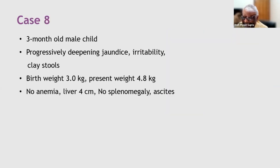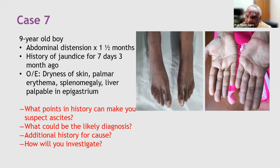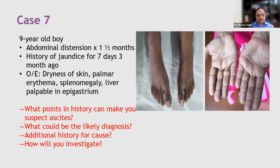Liver biopsy for autoimmune hepatitis and metabolic profile are also important investigations. To summarize: for liver dysfunction — liver function tests, serum protein, and prothrombin time; for complications — upper GI endoscopy and portal venous Doppler; electrolytes; and ascitic tap if warranted. If there is fever, ascitic tap may be necessary.